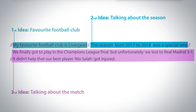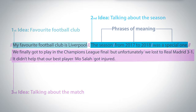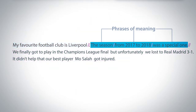Within those three sentences we also have phrases of meaning. Each of these phrases are also split by shorter pauses, such as in the second sentence: 'This season from 2017 to 2018 was a special one.'